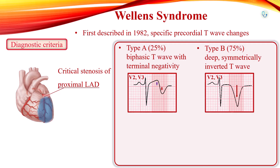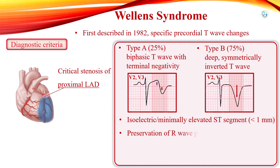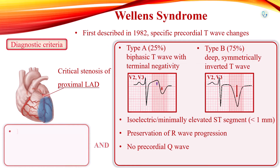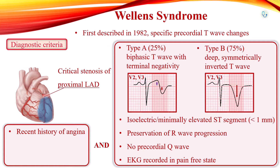There are no other EKG features of myocardial infarction. The ST-segment is isoelectric or minimally elevated, there is preservation of precordial R-wave progression, and no precordial Q-waves. Wellens is a syndrome and not an EKG-only finding. To make a diagnosis, there must be a recent history of chest pain for at least 20 minutes, with complete resolution of pain at the time of the EKG recording. Cardiac markers are normal or slightly elevated.